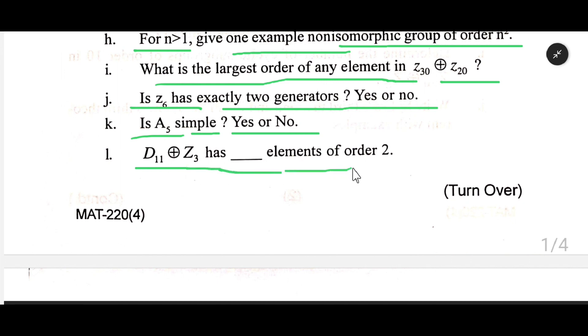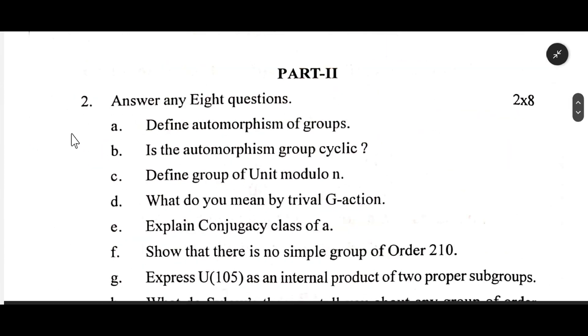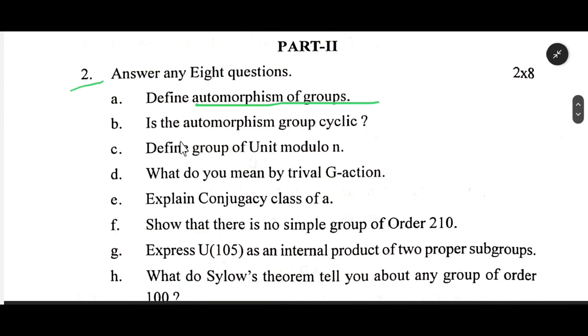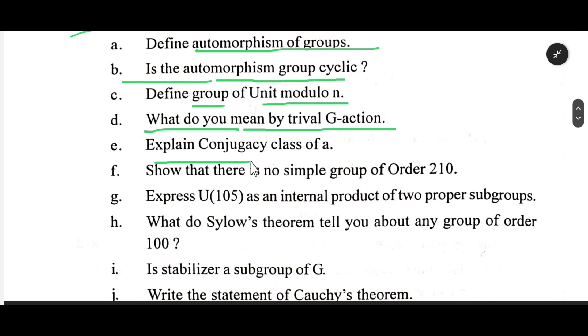D₁₁ ⊕ Z₃ has ___ elements of order 2. Number 2: Define automorphism of groups. Is the automorphism group cyclic? Define group of units modulo n. What do you mean by trivial G-action?